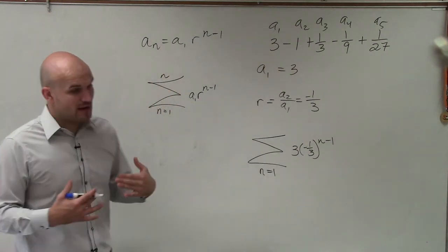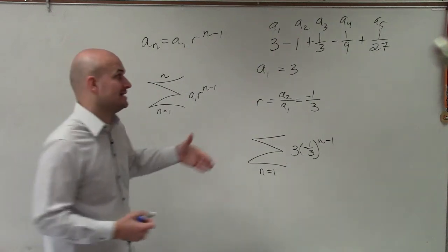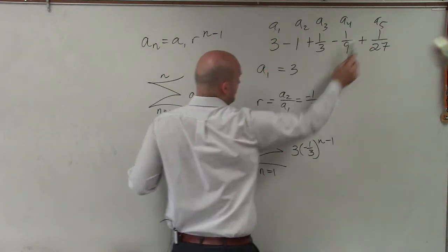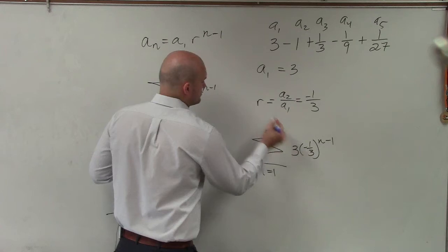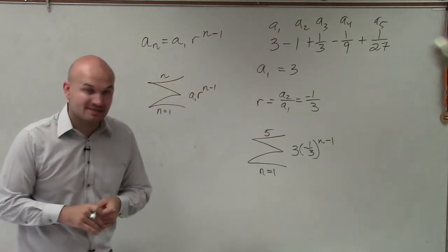Now, what we need to do is determine how many terms am I going to be adding up? Well, we have a total of 5 in this sequence. So what we call my upper limit is going to be 5.